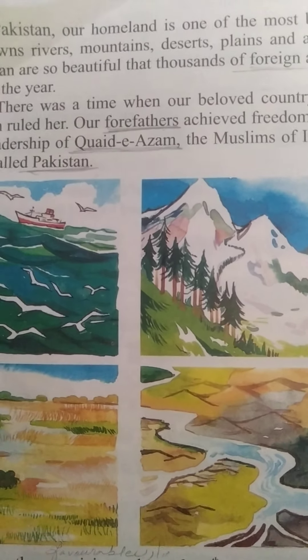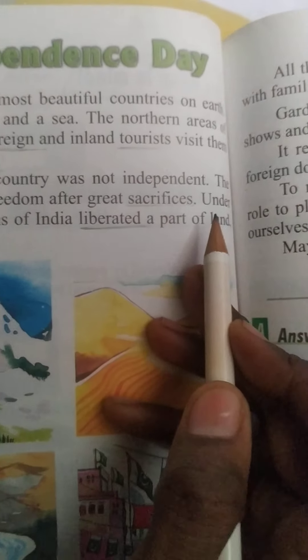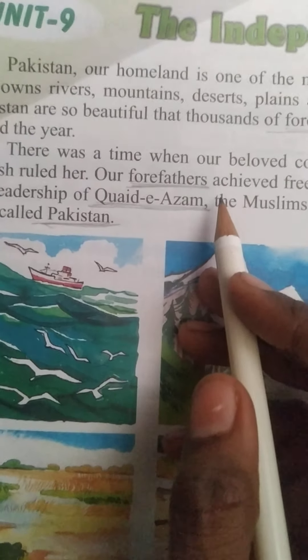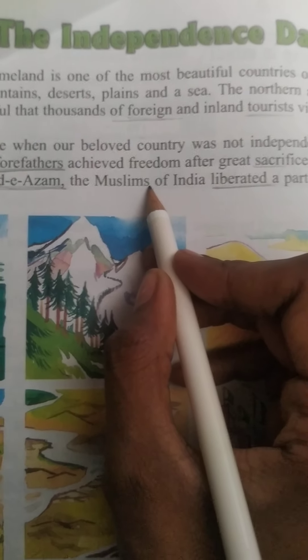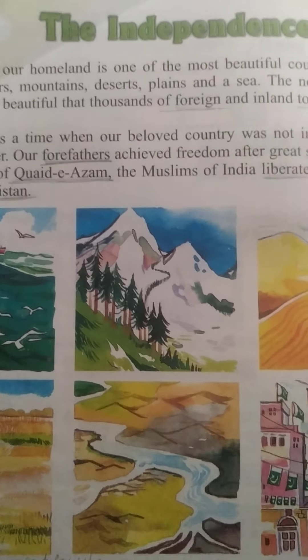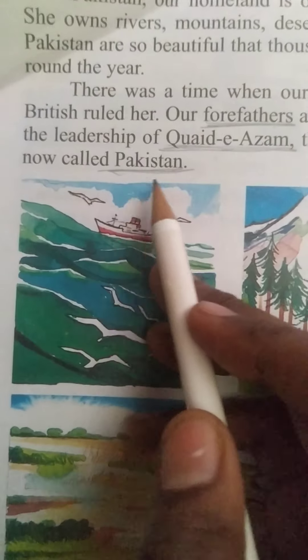The British ruled her. The British ruled our forefathers. Our forefathers achieved freedom after great sacrifices. Under the leadership of Quaid-e-Azam, the founder of Pakistan, the Muslims of India were liberated and a piece of land, now called Pakistan, was established.